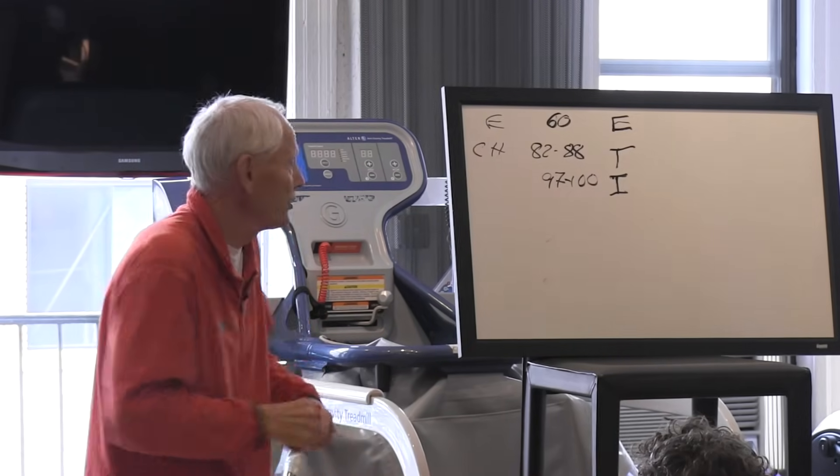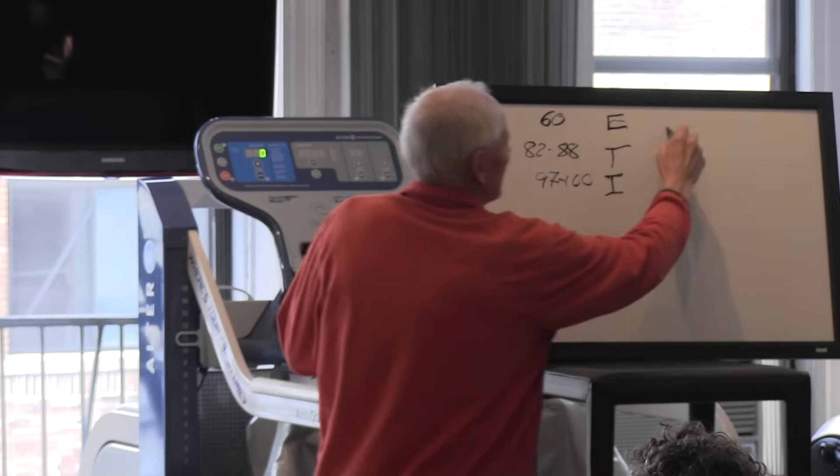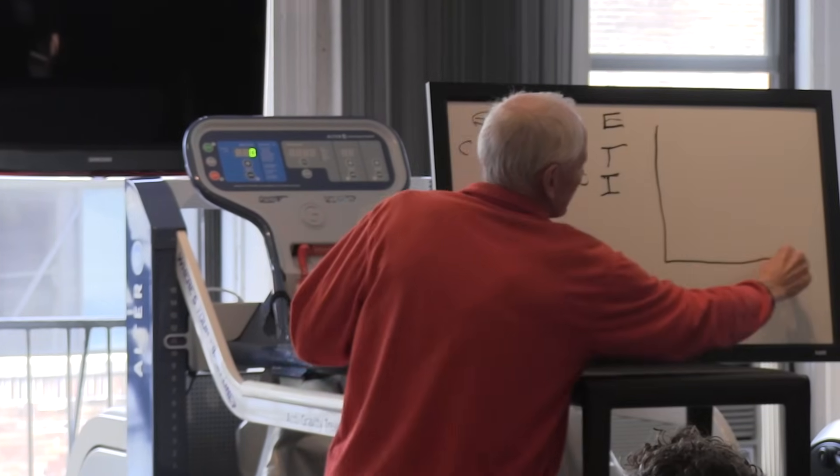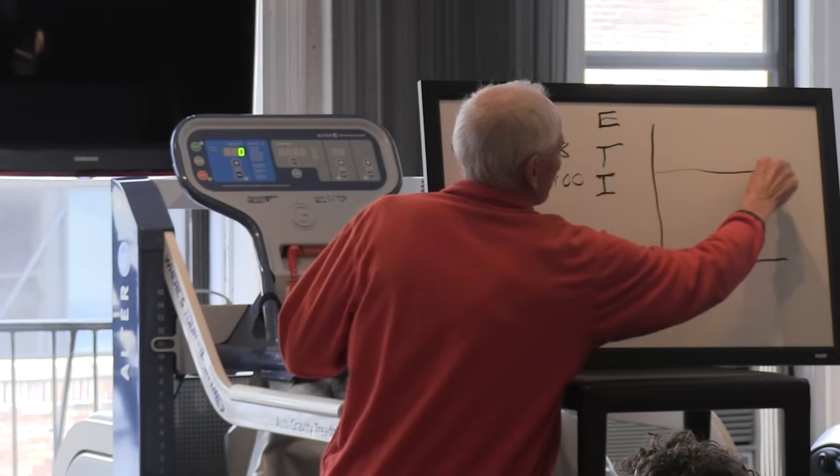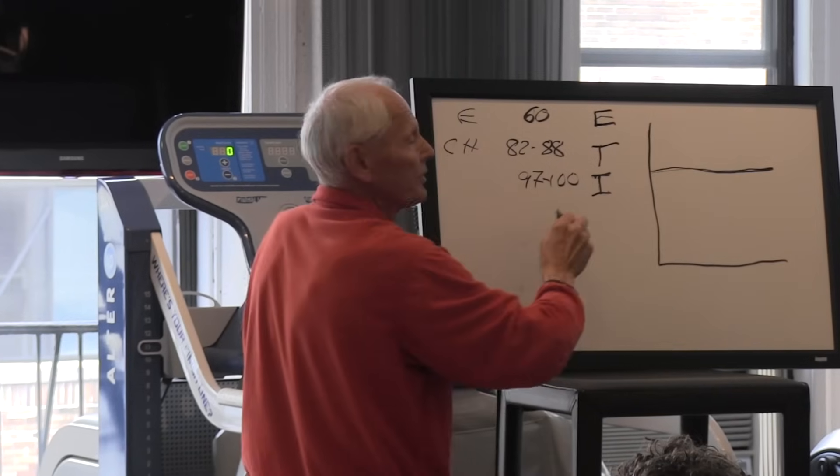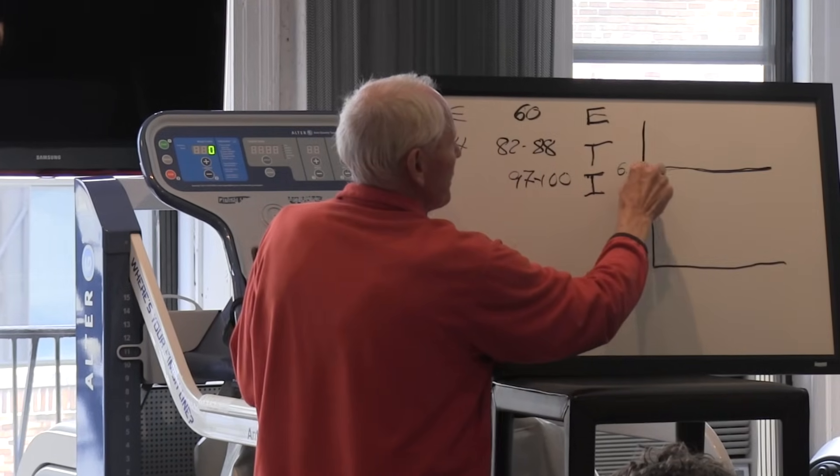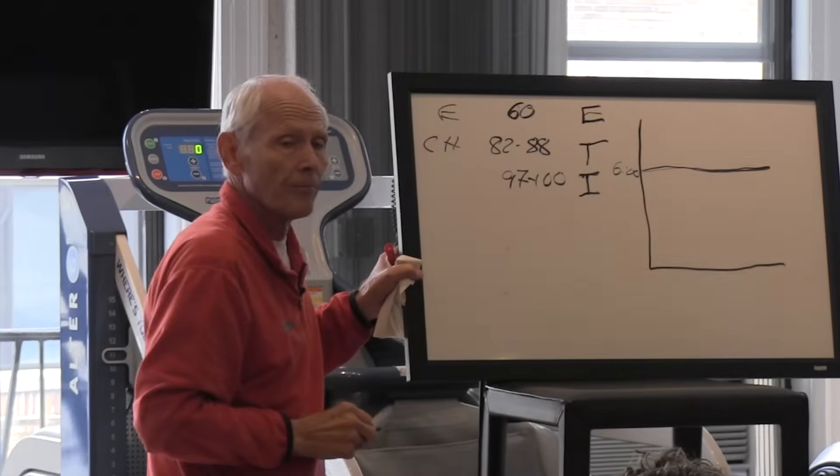Because going too fast, I'll show you a good example of that if you can see this. Let's say you're doing some intervals. This is your VO2 max up here, right? And let's say your VO2 max is associated with running at a six-minute mile pace.